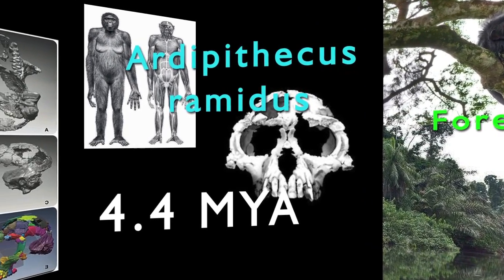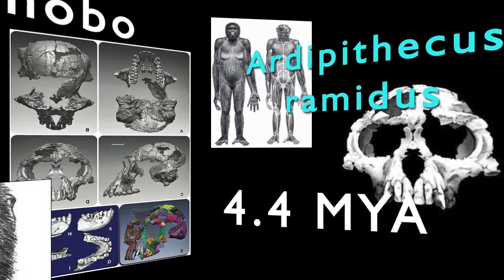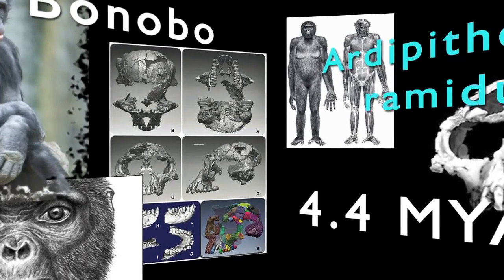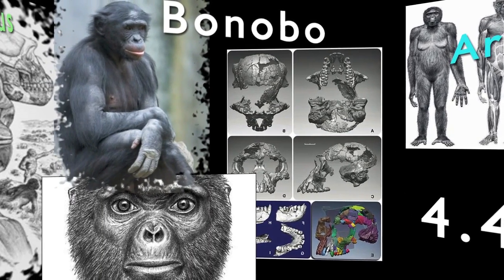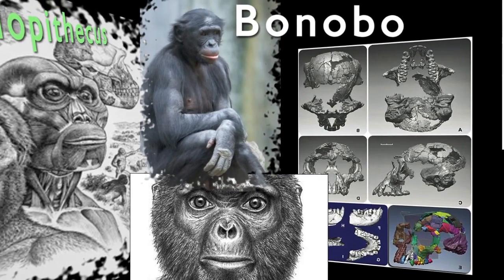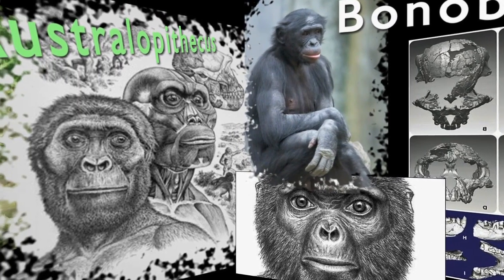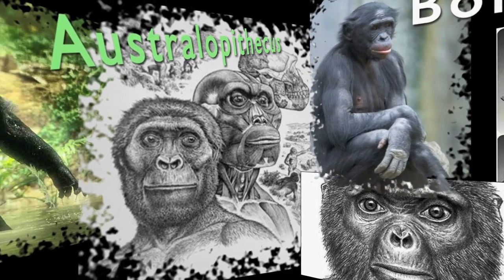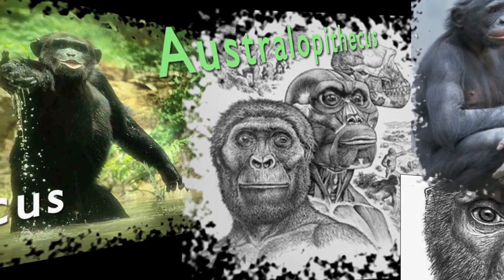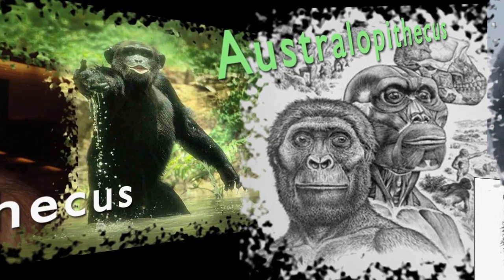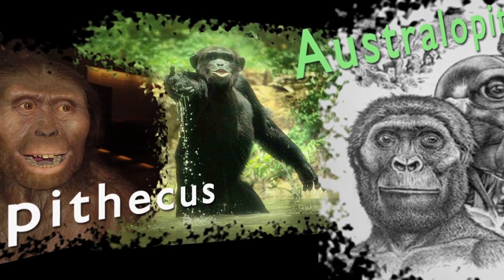Moving forward in time, we would find Ardipithecus ramidus at around 4.4 million years in the past. Ardipithecus ramidus displays characteristics that are transitional between chimpanzees and the later Australopithecines. The canines are smaller than chimpanzee, but larger than Australopithecines. Ardipithecus ramidus most likely lived in a forested environment near lakes and rivers.